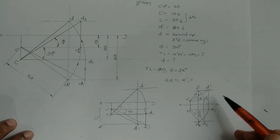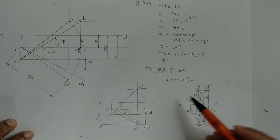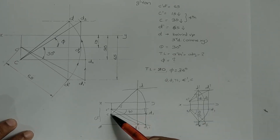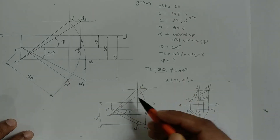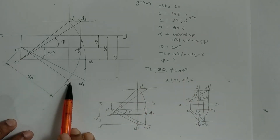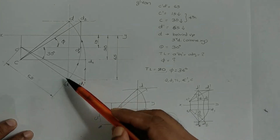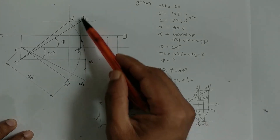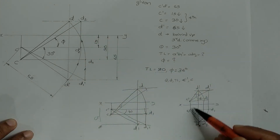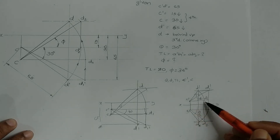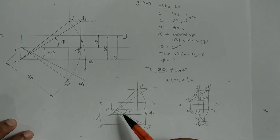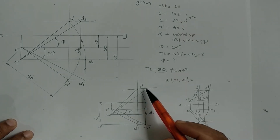We will now construct CD2. Using CD2, we apply the true inclination. Rotate D to get D2 using the arc from the top view construction. D2 is the rotated position. We repeat the CD2 construction to finalize the second rotation giving us the inclination with VP.